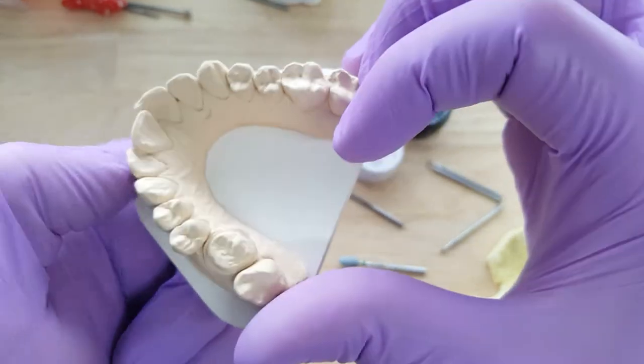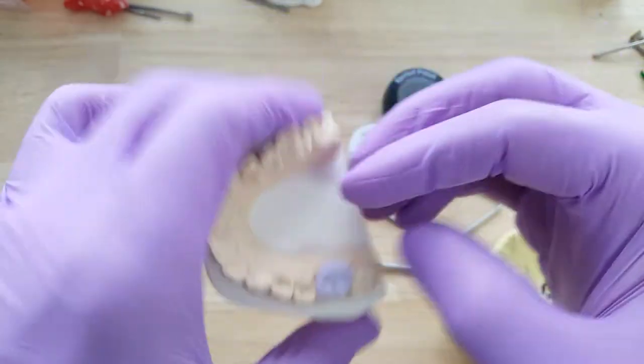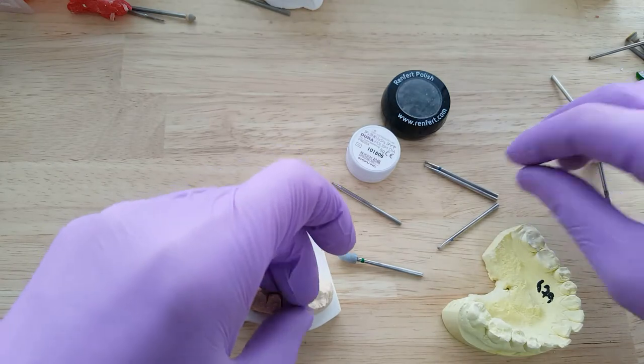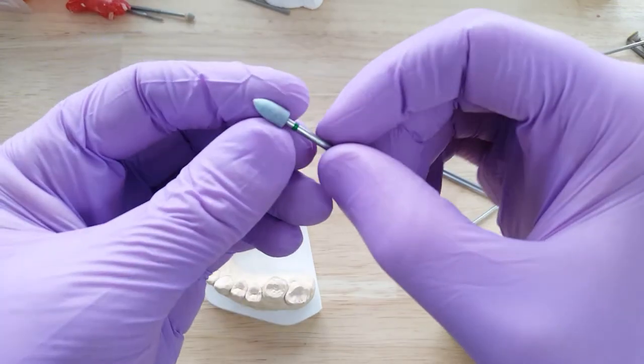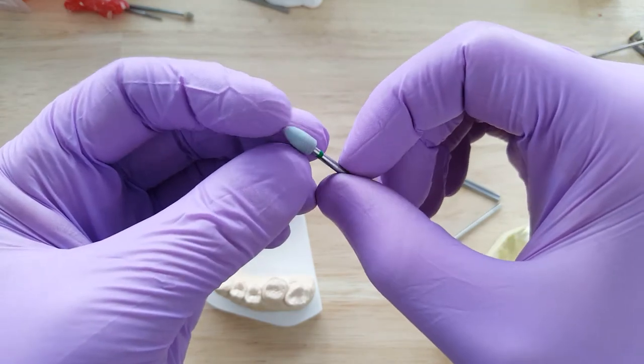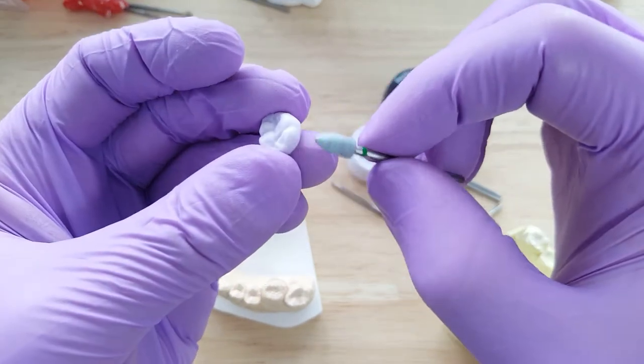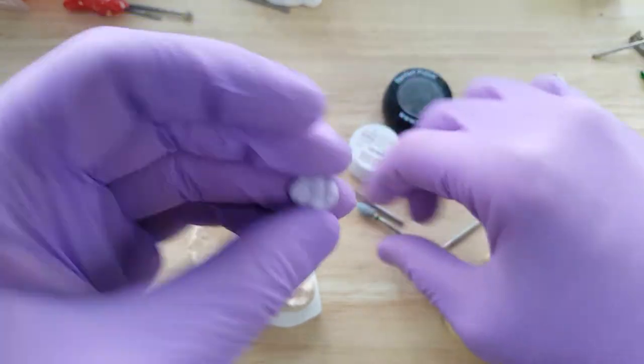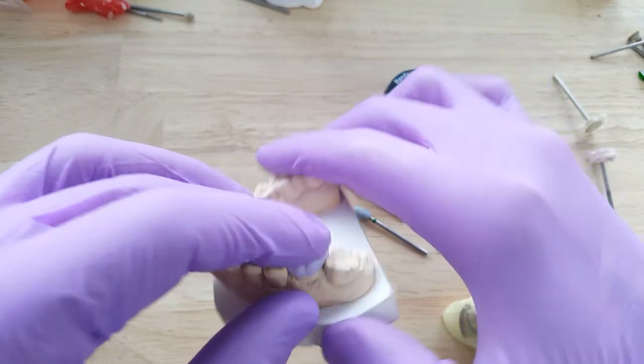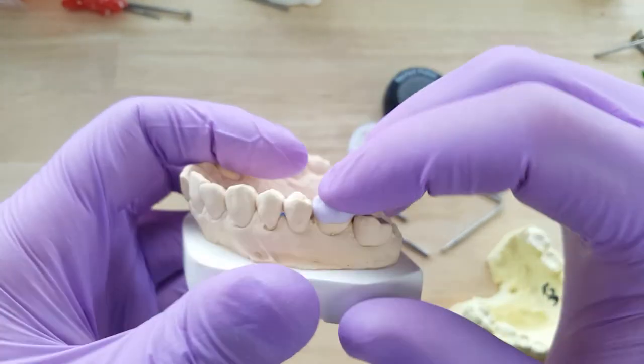Right from the start, to round off the sprue I've got this blue stone here. That's sort of a medium grit, so I'll just basically round off the sprue, shaping the crown as I go. Checking margins, checking contacts. An important thing to do is to have a little look down the buccal corridor.